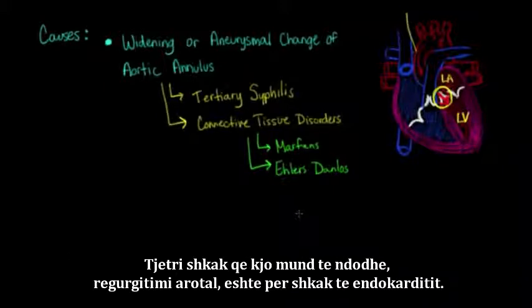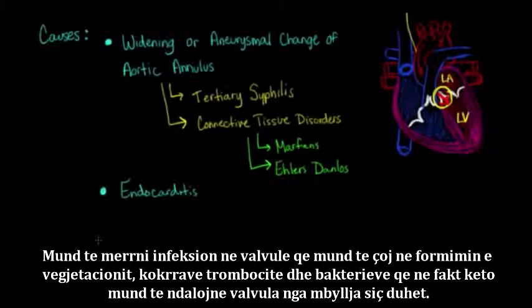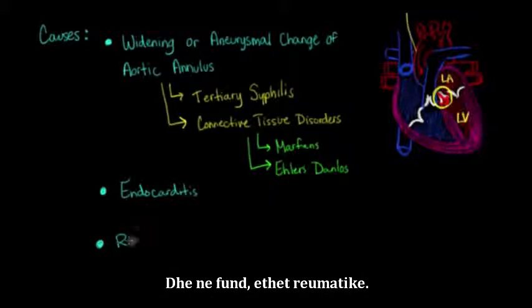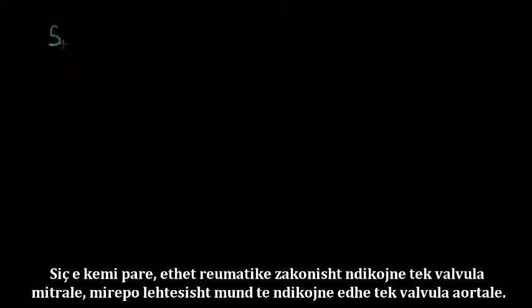Another reason aortic regurgitation can occur is due to endocarditis. You can get an infection of the valve that leads to the formation of a vegetation — a large collection of platelets and bacteria that can stop the valve from closing effectively. Finally, rheumatic fever can also cause aortic regurgitation; it normally affects the mitral valve, but it can easily affect the aortic valve as well.